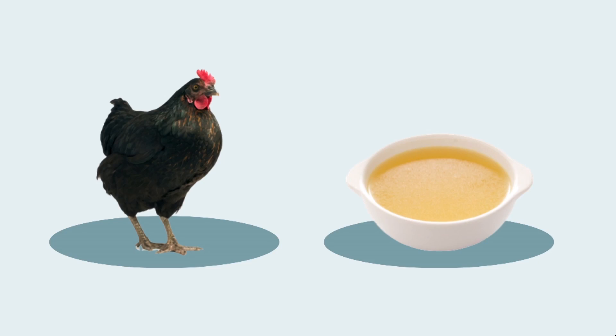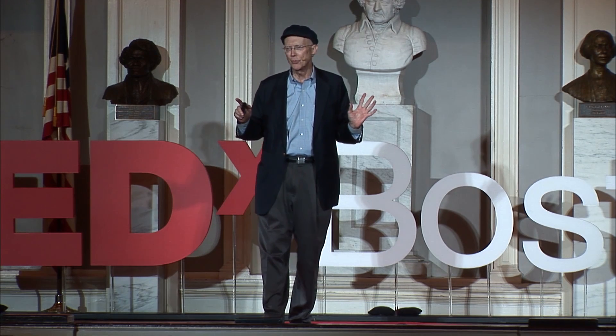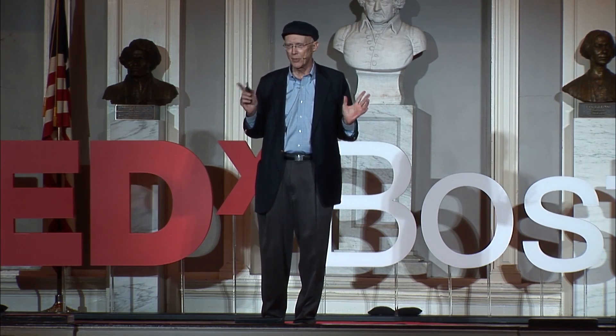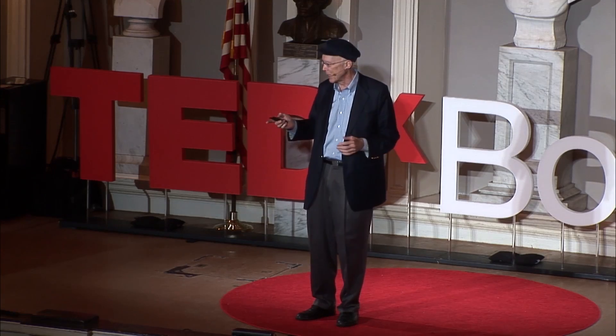I want to pose the question of where life comes from with this deeply scientific image — a chicken looking skeptically at a bowl of chicken soup. We all know how to disassemble a chicken into the pieces that make chicken soup: you boil it, and the molecules that make up the chicken make chicken soup. Think about the problem of going backwards. How would you go from chicken soup to chicken? No idea. But that's the problem of the origin of life, because something like that must have happened.